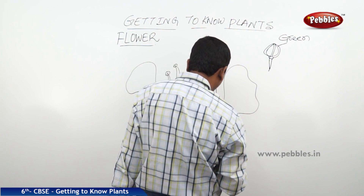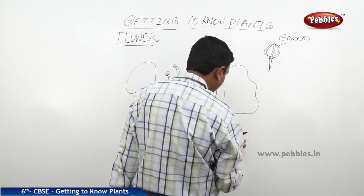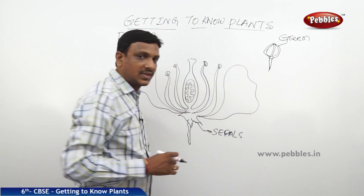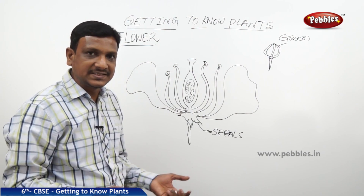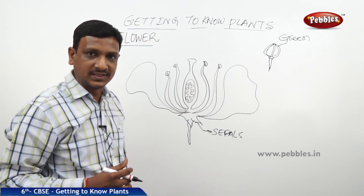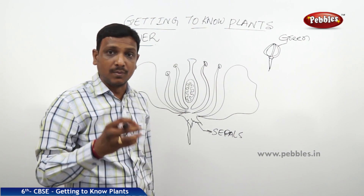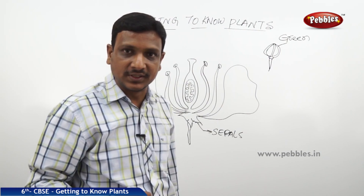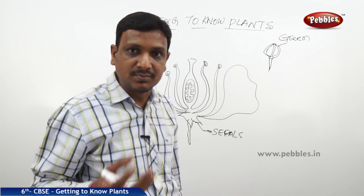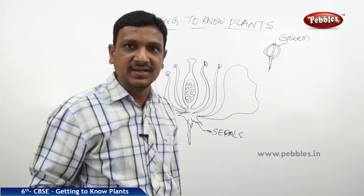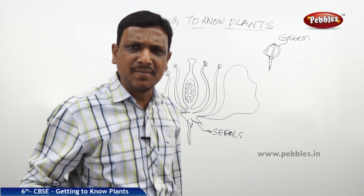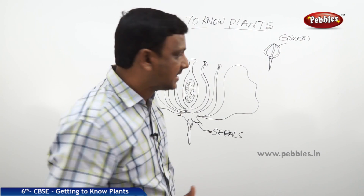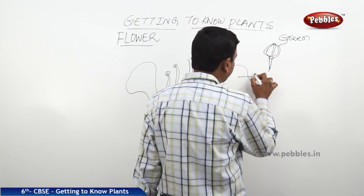Sepals are the outermost layer or covering of a flower. The sepals are covering the colorful parts of the flower, which are the main attraction. The colored part of the flower — sometimes white, sometimes red, pink, orange, purple, blue, and many other colors — those are called petals. So petals are the attractive part of a flower.